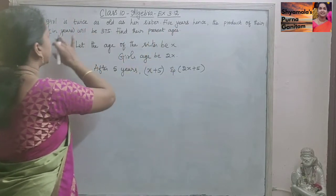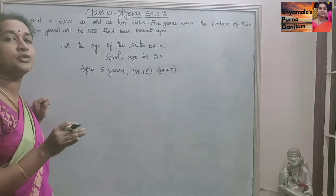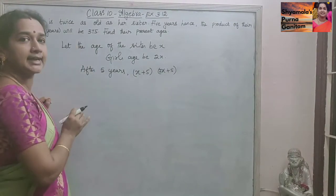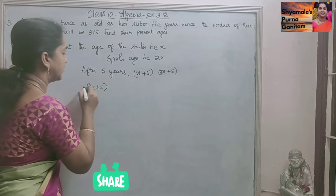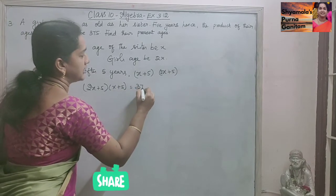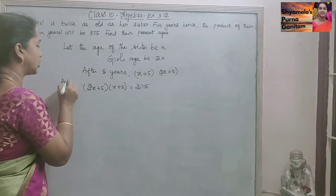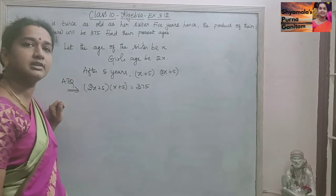Then, the product of their ages after 5 years will be 375. So (2X plus 5) times (X plus 5) is equal to 375. According to the question, we will get like this. The product of their ages is 375.